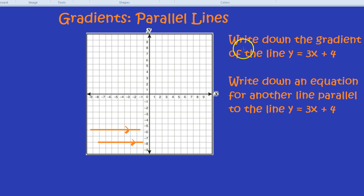First of all we have the question, write down the gradient of the line y equals 3x plus 4. Now, I've covered this in another video but the gradient essentially is the number next to the x. If you have an equation of the form y equals something x plus something, then the number next to the x is the gradient. So here 3 is the gradient.